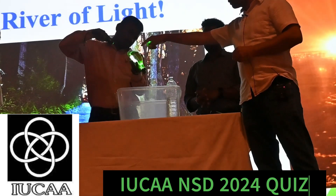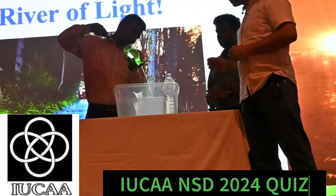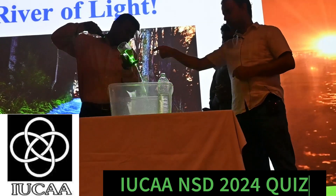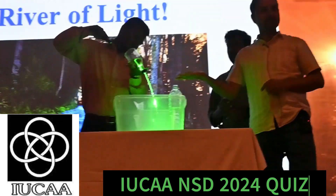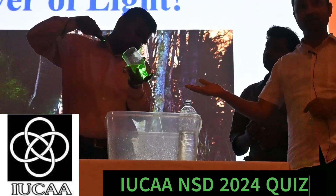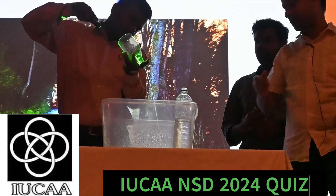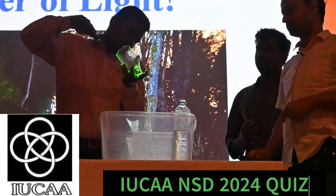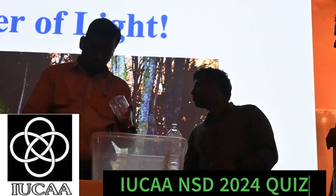You will see that this laser light is simply following the path of the water. So that is the river of light — light is not going straight, it is following the path of that water which is falling. In fact, you can see it there also. Do you want us to do it again?